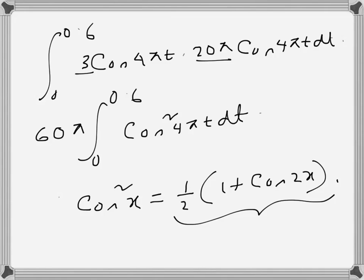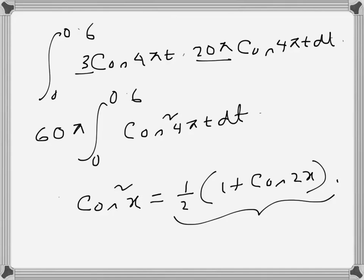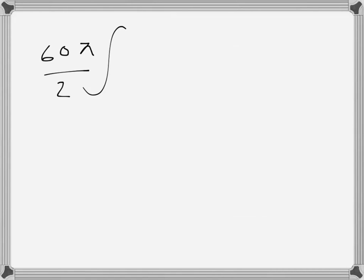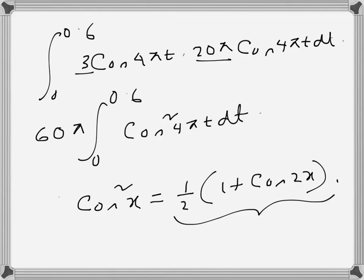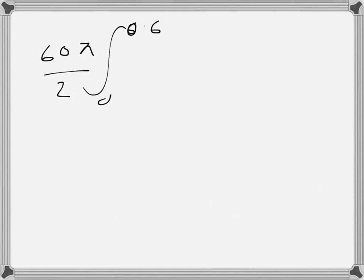Let's do that: 60π, and that one becomes—there's a 2 there—0 to 0.6. We can't do this unless we write it in terms of the double angle, then it becomes 1 plus cos 8πt dt.